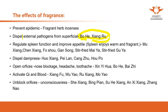Fragrant herbs can also regulate the spleen function and improve the appetite. Patients suffering from poor spleen function or poor appetite can benefit from fragrant herbs. After stir-frying herbs, you can also create a fragrance. Fragrant herbs can also dispel dampness.